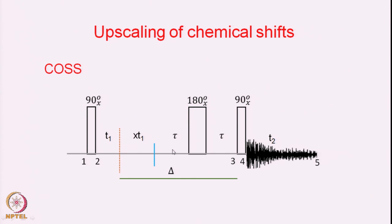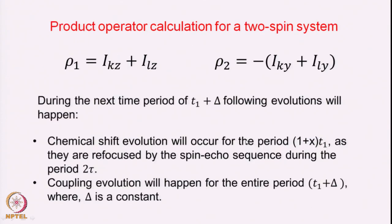During the tau-180-tau period, the chemical shifts will get refocused because this is the spin echo sequence — whatever evolution happens during the first tau period gets refocused during the second tau period, so chemical shift will not evolve during this 2-tau period. It will however evolve during T1 and XT1. The coupling constants are not affected by the 180-degree pulse, and they will evolve during the entire period T1 plus delta. We will now do an explicit calculation using the product operator formalism, though we will not go through as much detail as for the COSY.